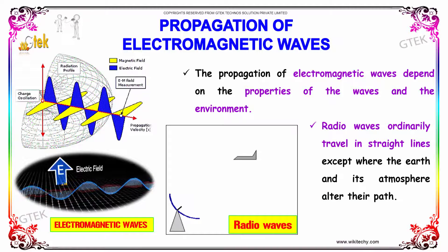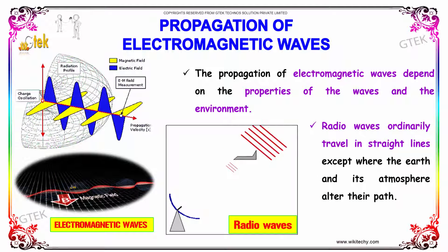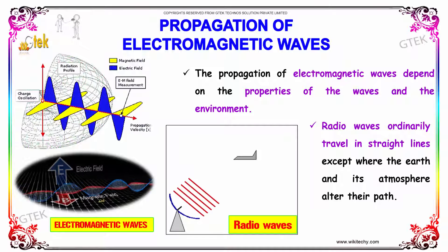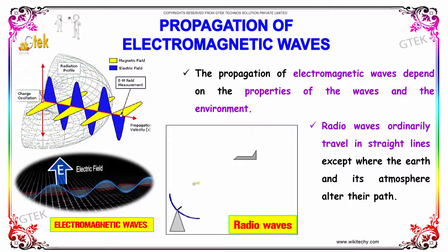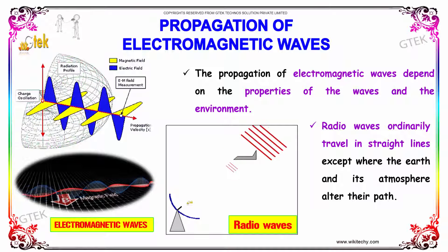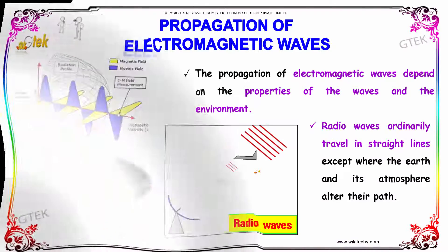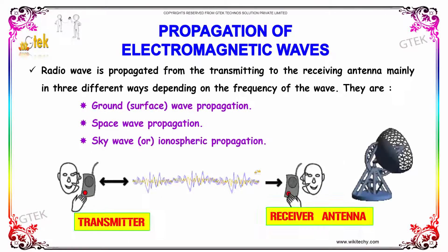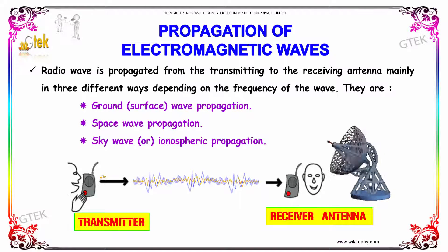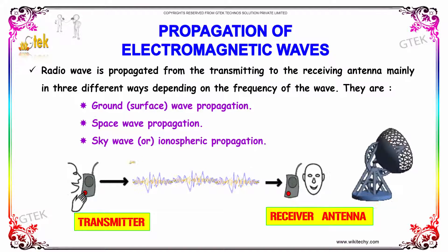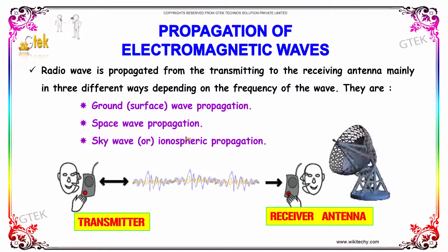The propagation of electromagnetic waves depends on the properties of the waves and the environment where it is used. Radio waves ordinarily travel in a straight line except where the earth and the atmosphere alter their path. The radio wave is propagated from the transmitting to the receiving antenna mainly in three different ways, depending on the frequency of the wave.